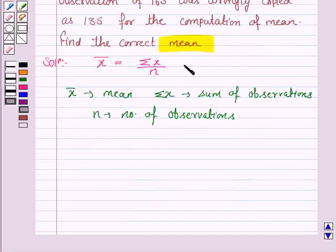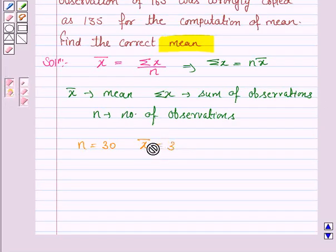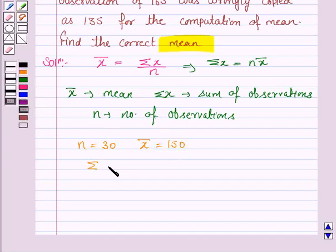From this we have sum of observations is equal to n times mean. So here n is 30 and mean is given to be 150.